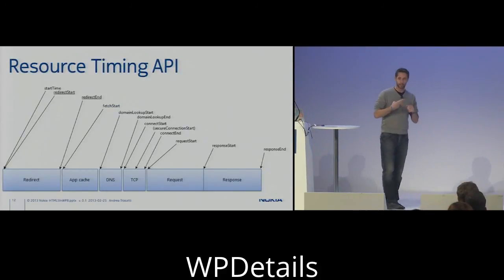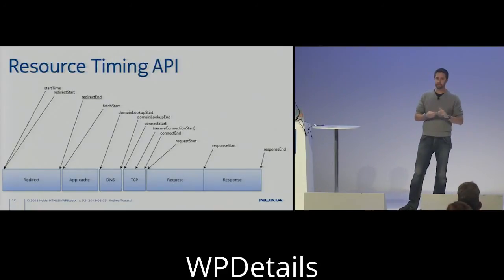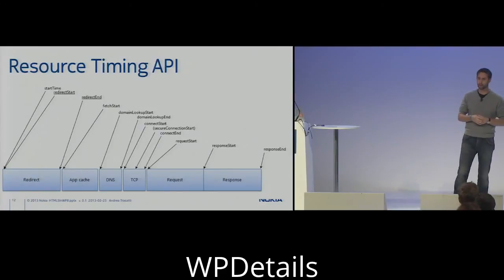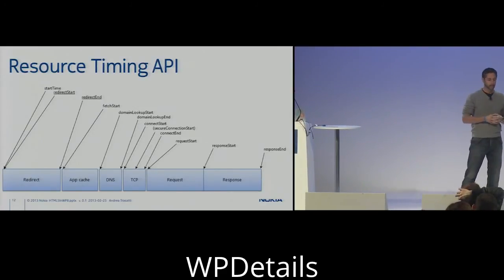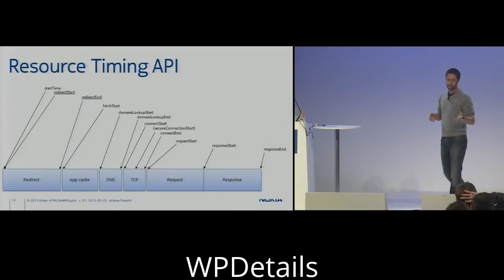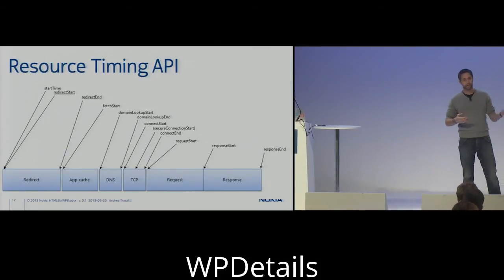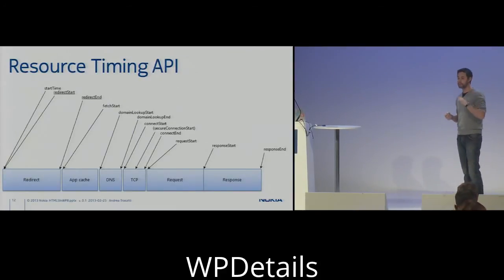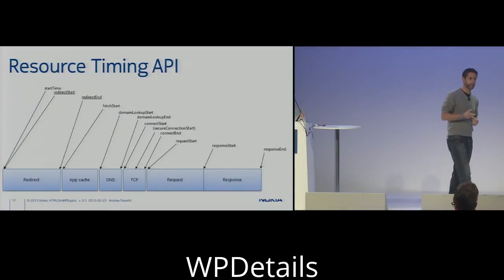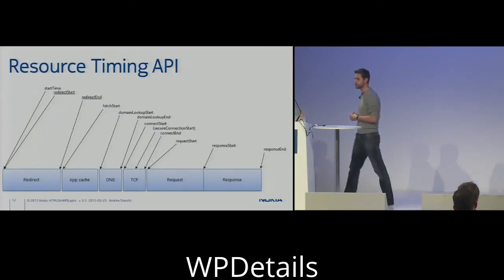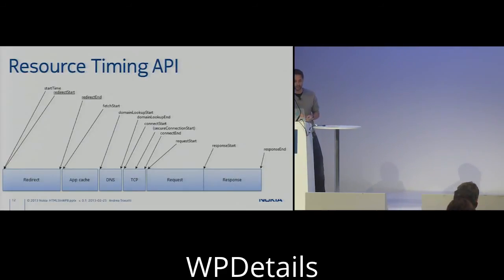Resource Timing and Performance Timeline are two new specifications currently only implemented in Internet Explorer 10, but coming to Chrome and Firefox very soon. At a recent workshop in the Bay Area, all browser vendors committed to implementing these new APIs. Similar to Navigation Timing, Resource Timing gives you a breakdown of all events for the browser to load content, but for every single resource that composes the page. The Performance Timeline tells you exactly which files were loaded when and in which order, while Resource Timing gives you details — redirect, app cache, DNS, TCP, request and response — for each element.